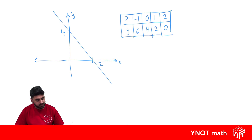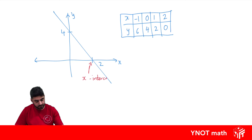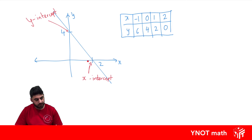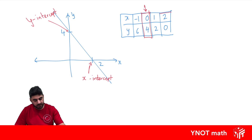Intercepts are where the graphs cross — where the straight line crosses the x-axis and the y-axis. Where it crosses the x-axis, that's what we call the x-intercept. And where it crosses the y-axis, we call the y-intercept. Always at the x-intercept, the y-value is 0. And at the y-intercept, the x-value is 0. We can see this from the table: looking at the y-intercept of 4, its x-value is 0. And looking at the x-intercept of 2, its y-value is 0.